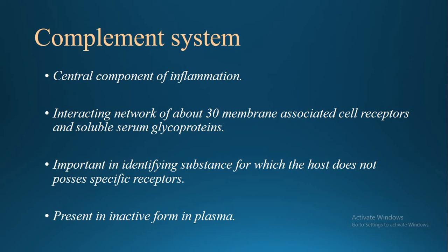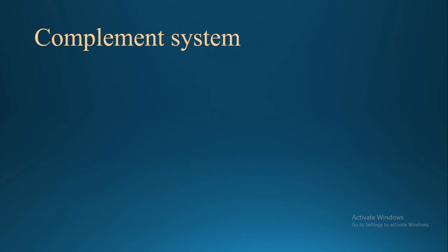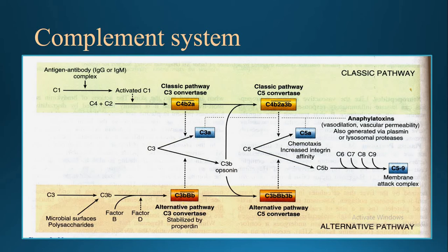The complement system is a central component of inflammation. It is an interacting network of 30 membrane-associated cell receptors and soluble serum glycoproteins, present in inactive form in plasma. The complement system gets activated by two pathways: the classic pathway and the alternate pathway. The classic pathway is initiated by antigen-antibody complexes, whereas the alternate pathway is stimulated directly by lipopolysaccharide on microbial surfaces or bacterial endotoxin.